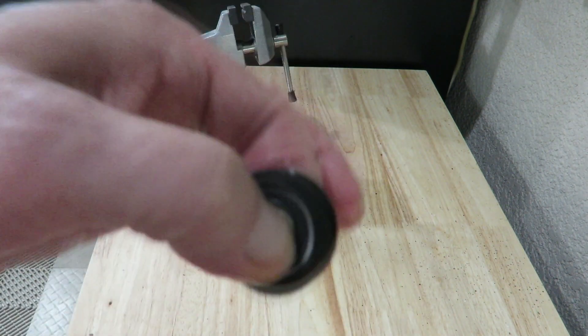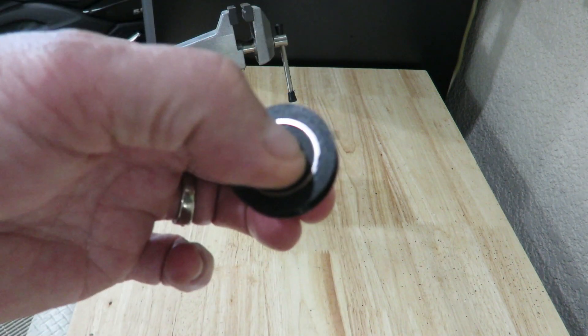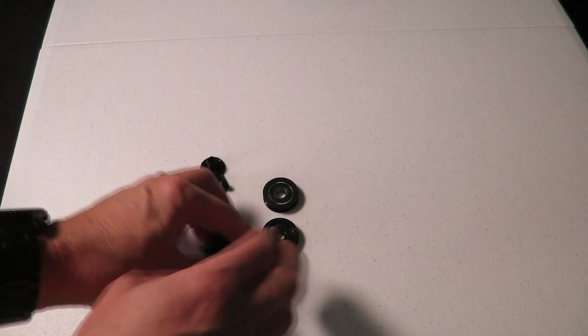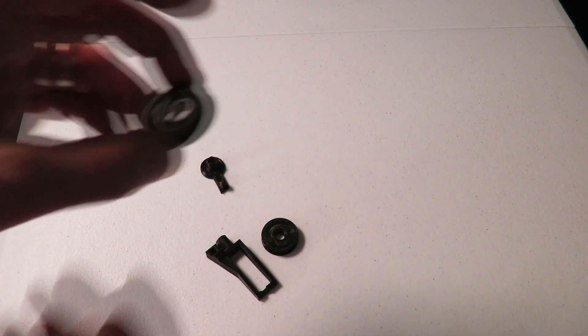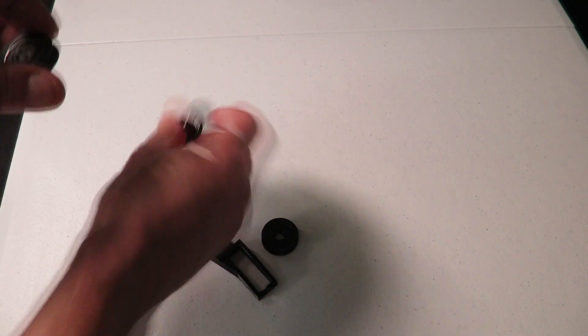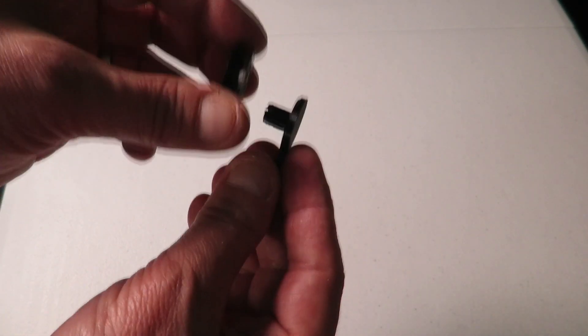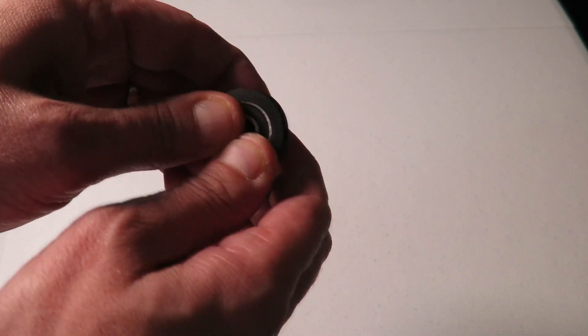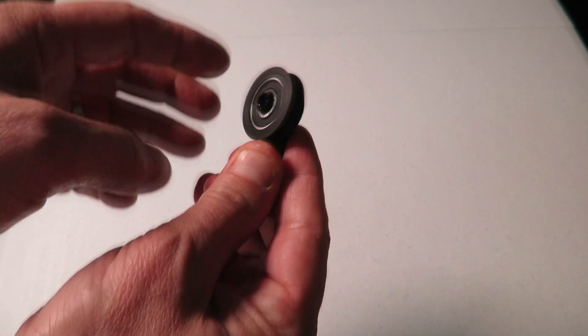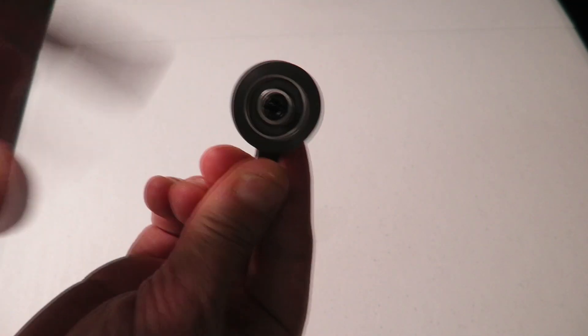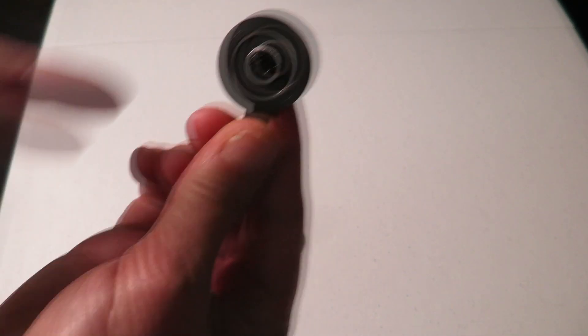Now we're ready to go put this thing together and mount it to our CR-10S Pro by Creality. All right guys. Now we'll take our pulley with the bearing mounted, the 608 bearing, and mount it to the shaft here on this piece. Just press it in with both thumbs. Clips in nicely. Look how that spins. It's going to be a very nice slick guide for your filament to run through.